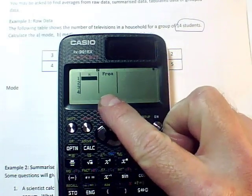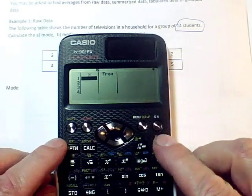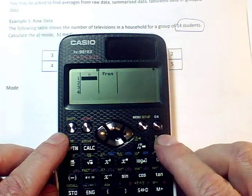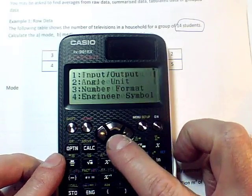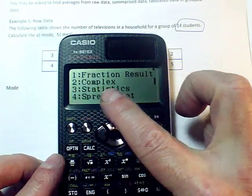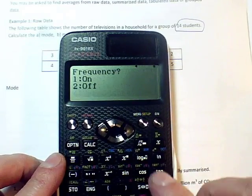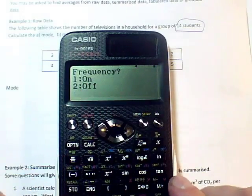Now, if when you go on your calculator you do not have this frequency column, then the way to get it is to do shift setup, and go down until you find statistics. It's there, it's option 3, so I press 3, and I make sure that I've got frequency turned on.